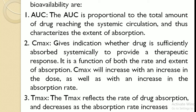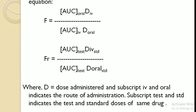Now we will discuss AUC, Cmax, and Tmax. The AUC is proportional to the total amount of drug reaching the systemic circulation and characterizes the extent of absorption. Cmax gives an indication of whether the drug is sufficiently absorbed systemically to provide a therapeutic response; it is a function of both the rate and extent of absorption, and increases with an increase in dose or absorption rate. Tmax reflects the rate of drug absorption and decreases as the absorption rate increases. The formula to determine bioavailability is: F = (AUC oral / AUC IV) × (D IV / D oral), where D is the drug dose.